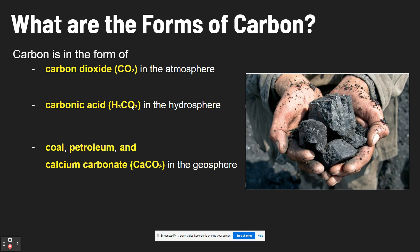Carbon is in the form of coal — which is what this image on the right shows — as well as petroleum and calcium carbonate, when it's in the geosphere. The geosphere makes up the Earth's crust, so think of rocks. You would be able to dig into a mountain and find coal.